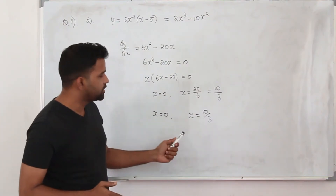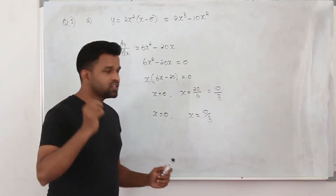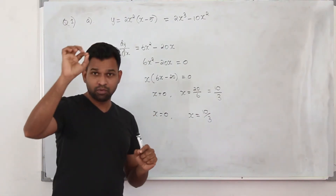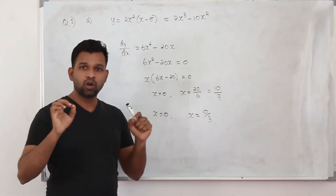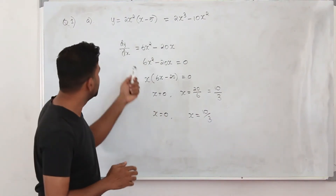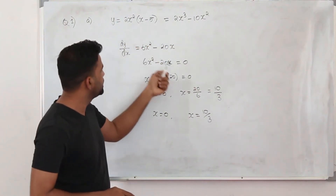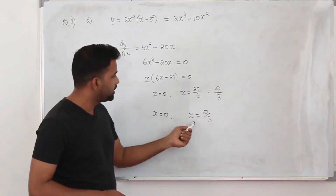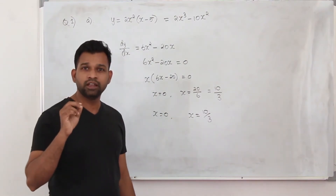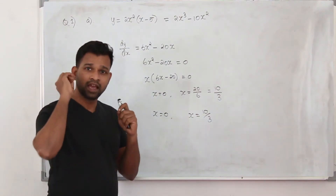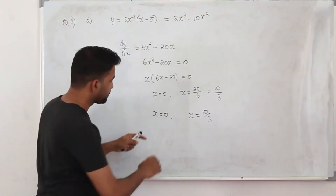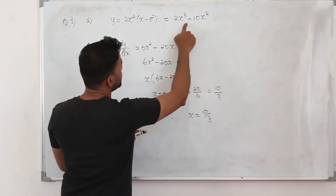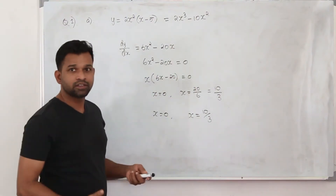The key point is that at the stationary point or turning point, the slope will be 0 — the gradient will be 0. Find the gradient function, equate it to 0, and you can find the x-coordinates. If they want the actual points, substitute those x values back into the original equation to find the corresponding y-coordinates.